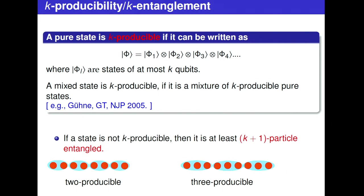A K-producible state is a state which is a tensor product of at most K-qubit units. The mixed K-producible state is simply a mixture of pure K-producible states. And if a state cannot be written like this, then we say it is K+1 particle entangled. For example, a two-producible state can be put together from two-qubit units that don't interact with each other.